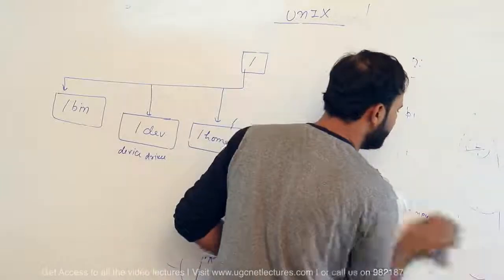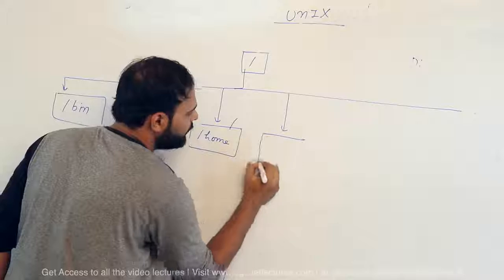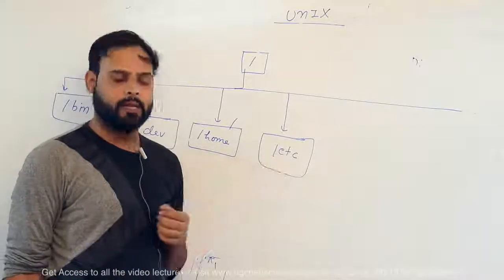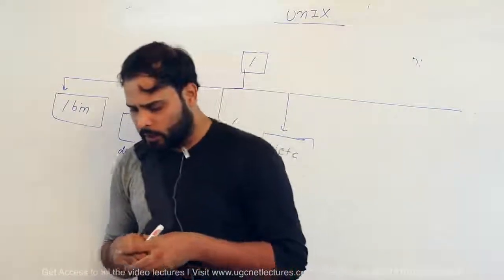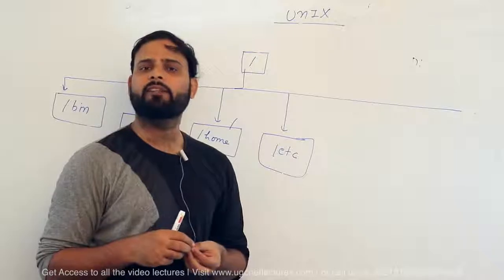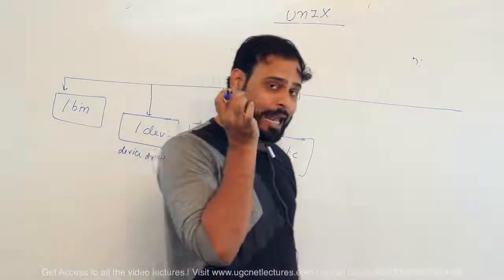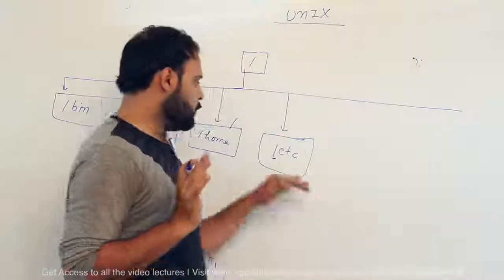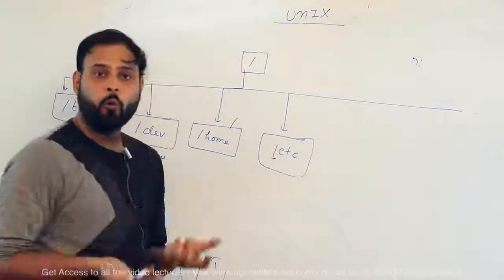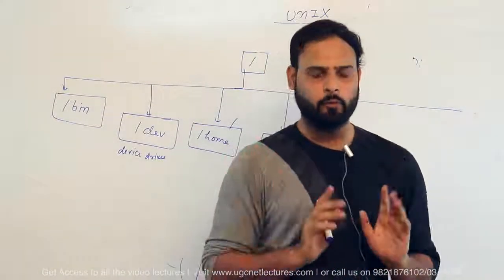The next directory is /etc, which stands for system configuration files. If you want to configure some additional device in your computer, you need system configuration files. All system configuration files are placed in the /etc folder. It comes from root, so the path is /etc. In upcoming lectures I will elaborate more on /etc and /home, but for exam purposes knowing it as the system configuration file folder is sufficient.